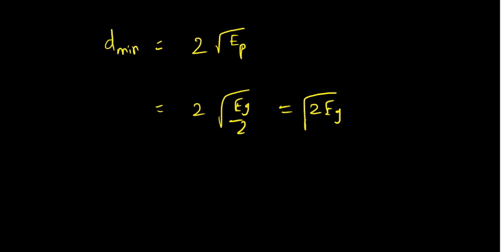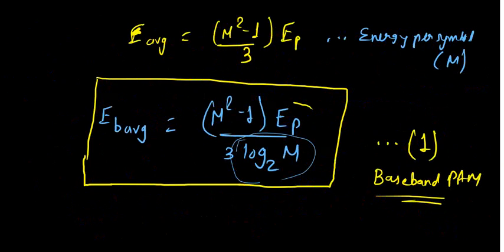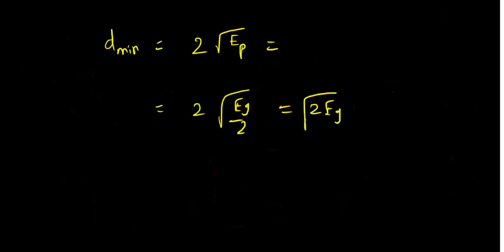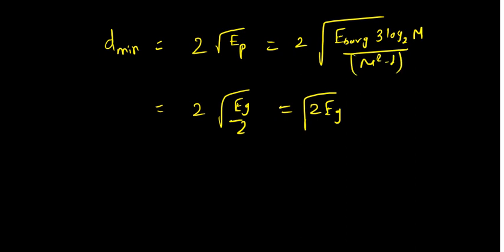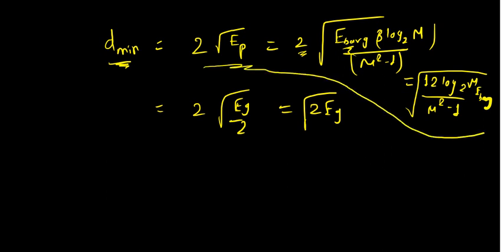Now substituting E_p from Equation 1, we can express d_min in terms of average bit energy E_b_avg. Substituting gives d_min = √[12 · log₂(M) / (M²−1) · E_b_avg] for baseband. Taking 2 inside the square root gives the factor of 12. This shows that the minimum distance and average energy are directly related.